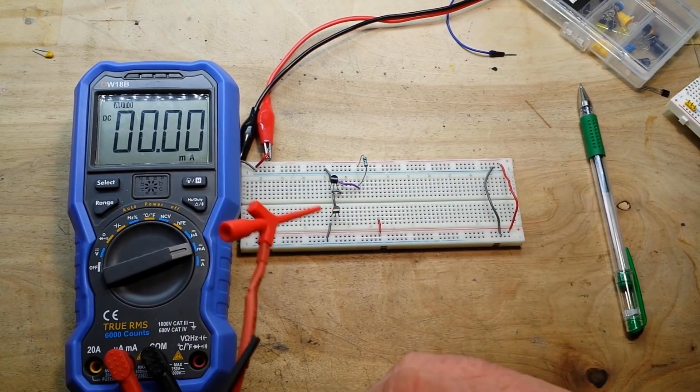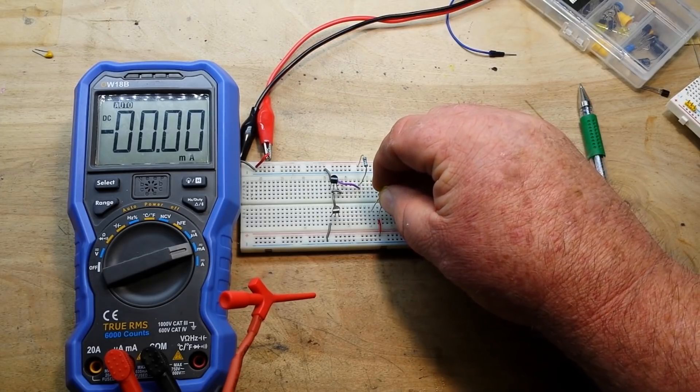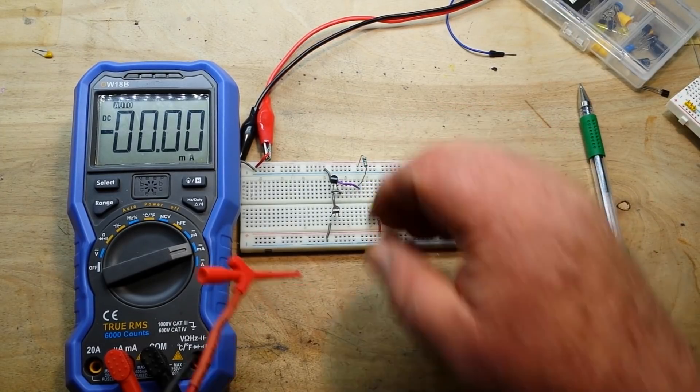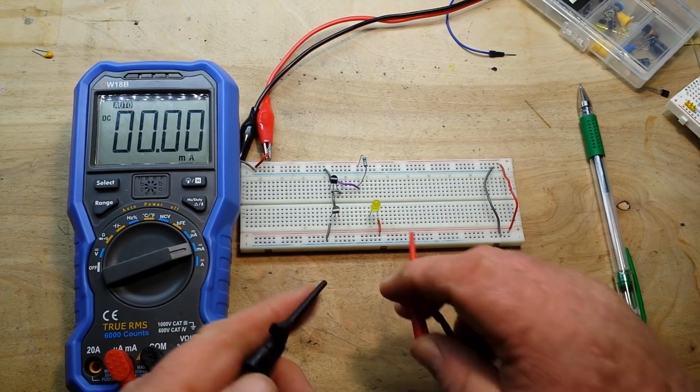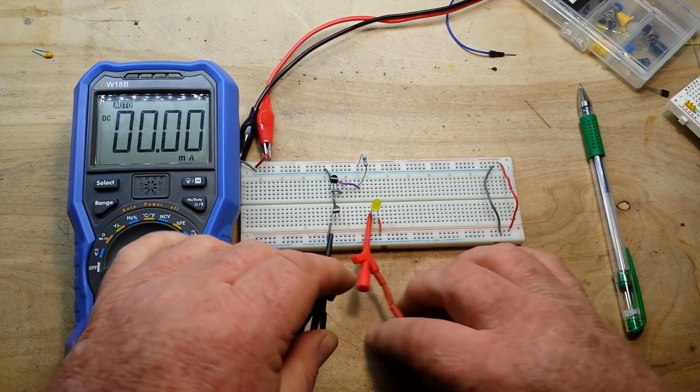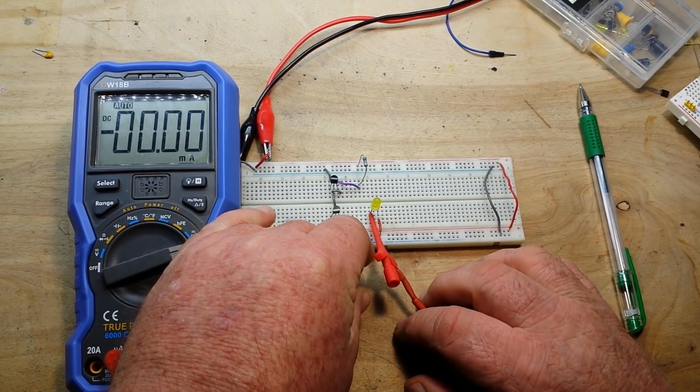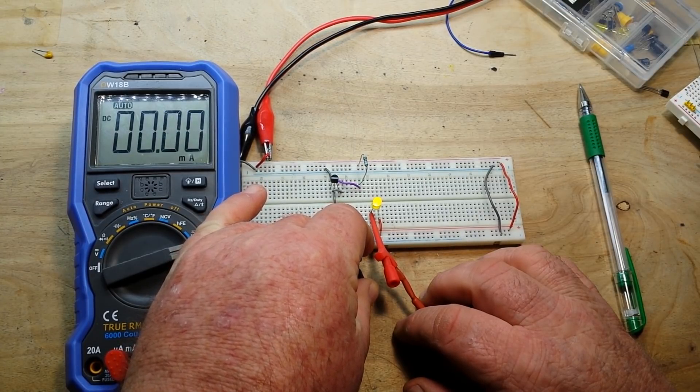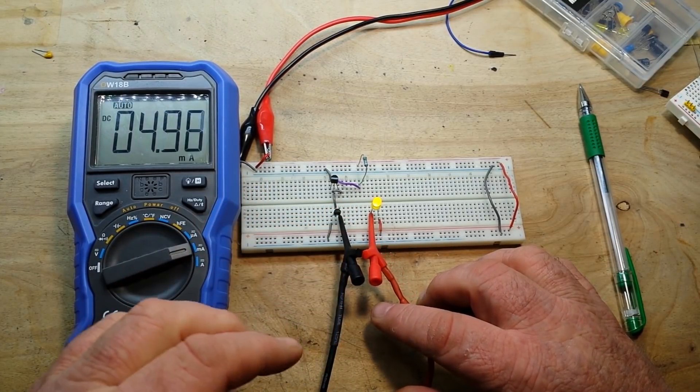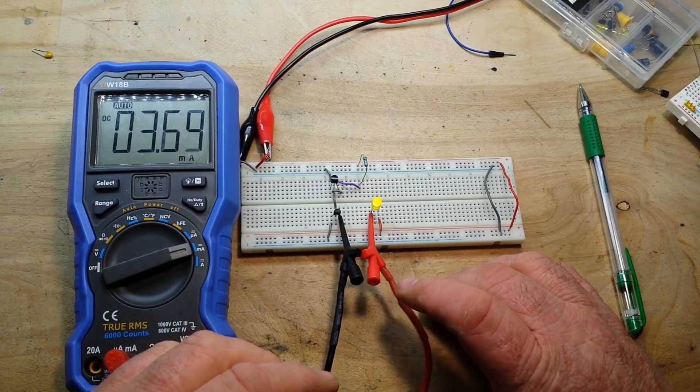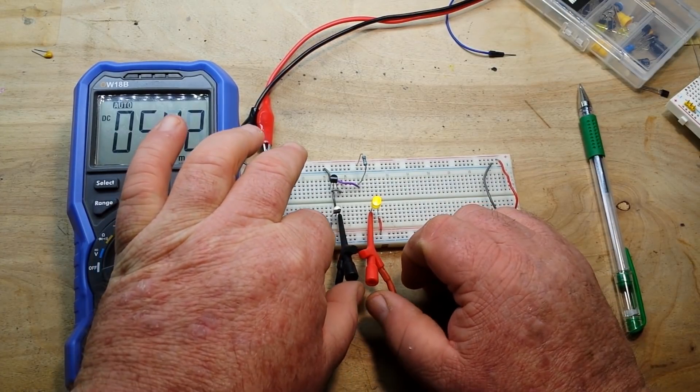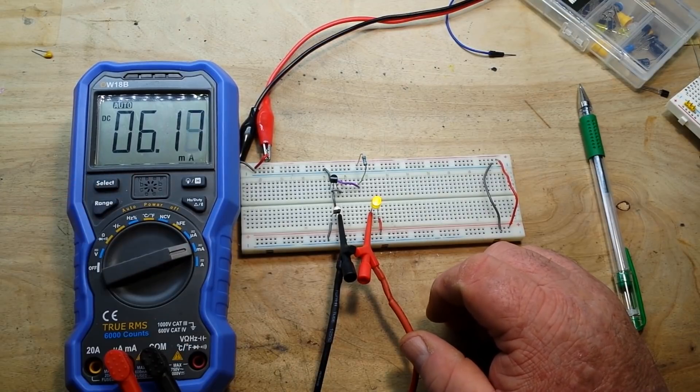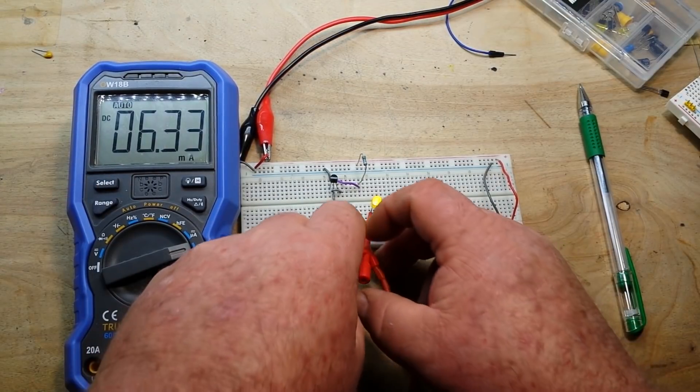We will start off with one LED which goes between VCC and the collector. Oopsies, trying to short things out there Pauly. There we are at about our 6 milliamps.